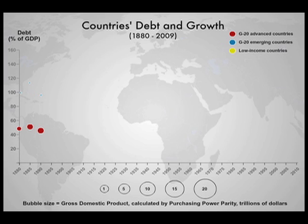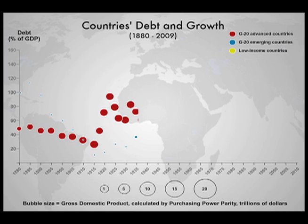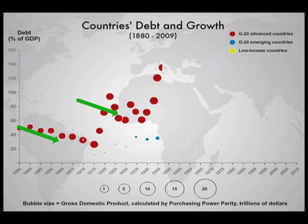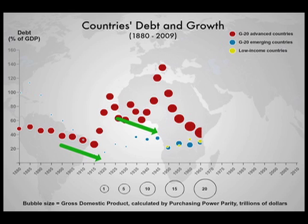The new IMF database shows how the relationship between a country's public debt and its economic growth has changed over time. Historically, fast-growing countries had low debt ratios, while slow growers struggled under higher debt. This trend is pictured on the left-hand side of the graph as the circles grow larger and move down along the timeline.